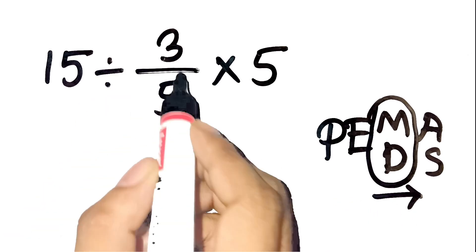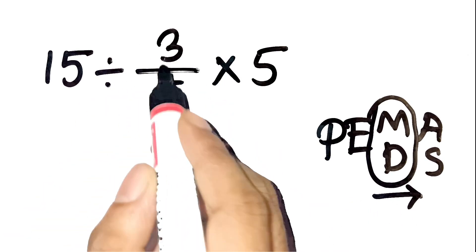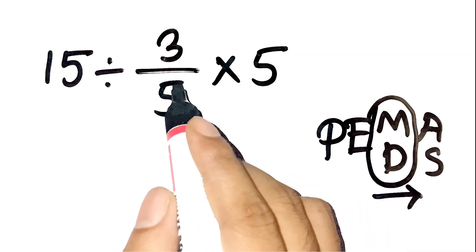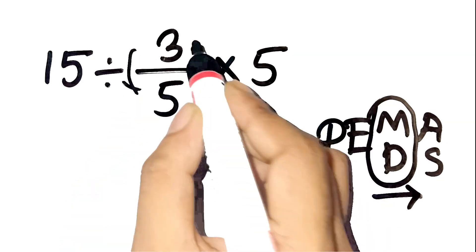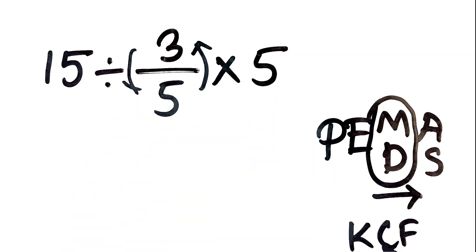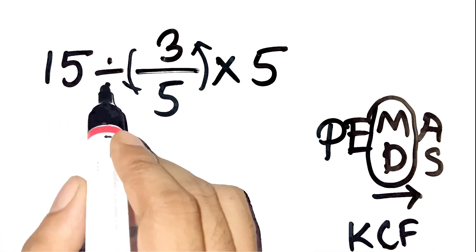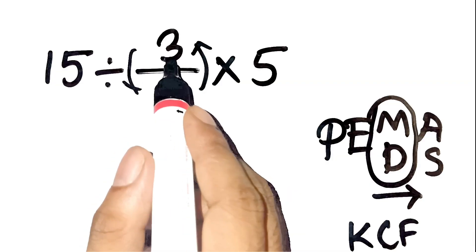Now, whenever we see a fraction in division, like divided by 3 over 5, it's often easier to flip it using the KCF rule. That's keep, change, flip. Keep the first number, change the division to multiplication, and flip the fraction.